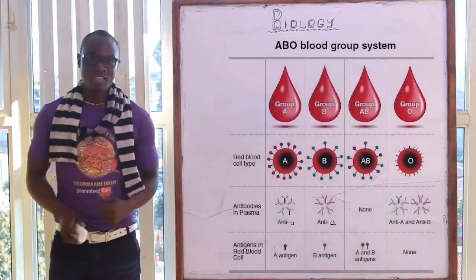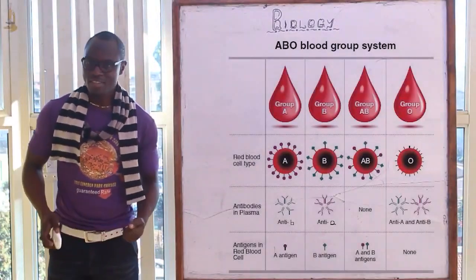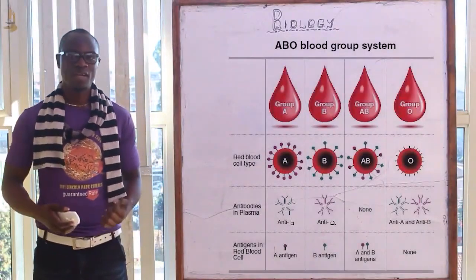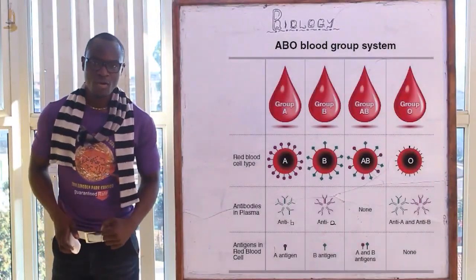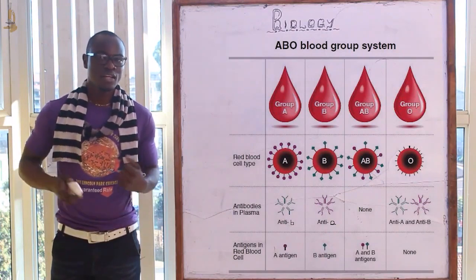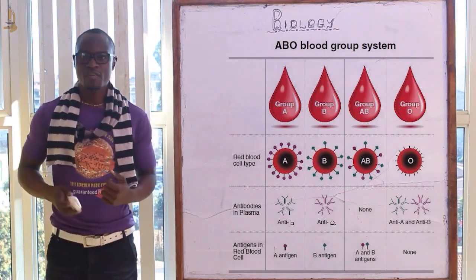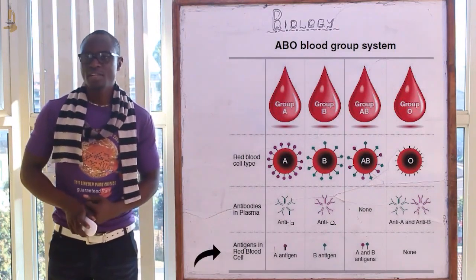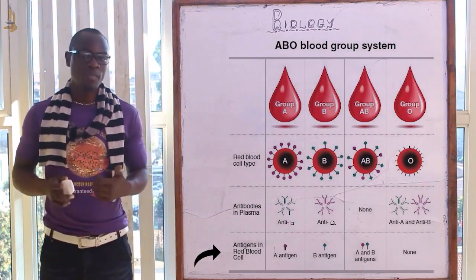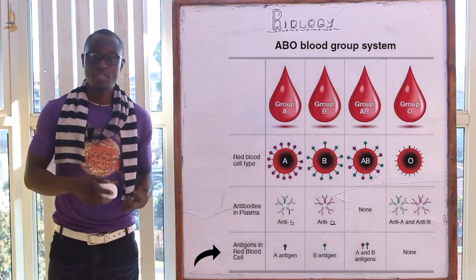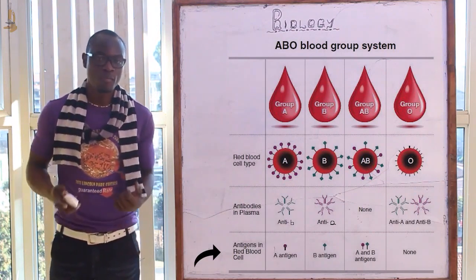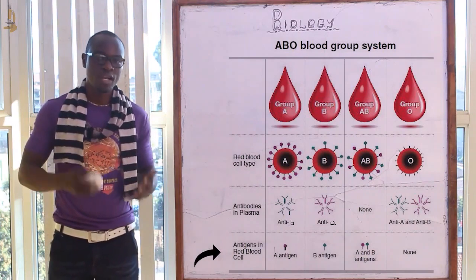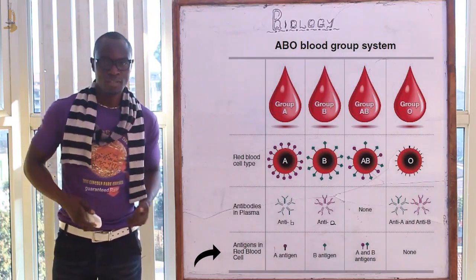Welcome to this class where we are going to discuss blood groups. The red blood cells have a protein called antigen on their surface, and the antigen determines the specific blood group of a person. The blood with antigen A is classified as blood group A.